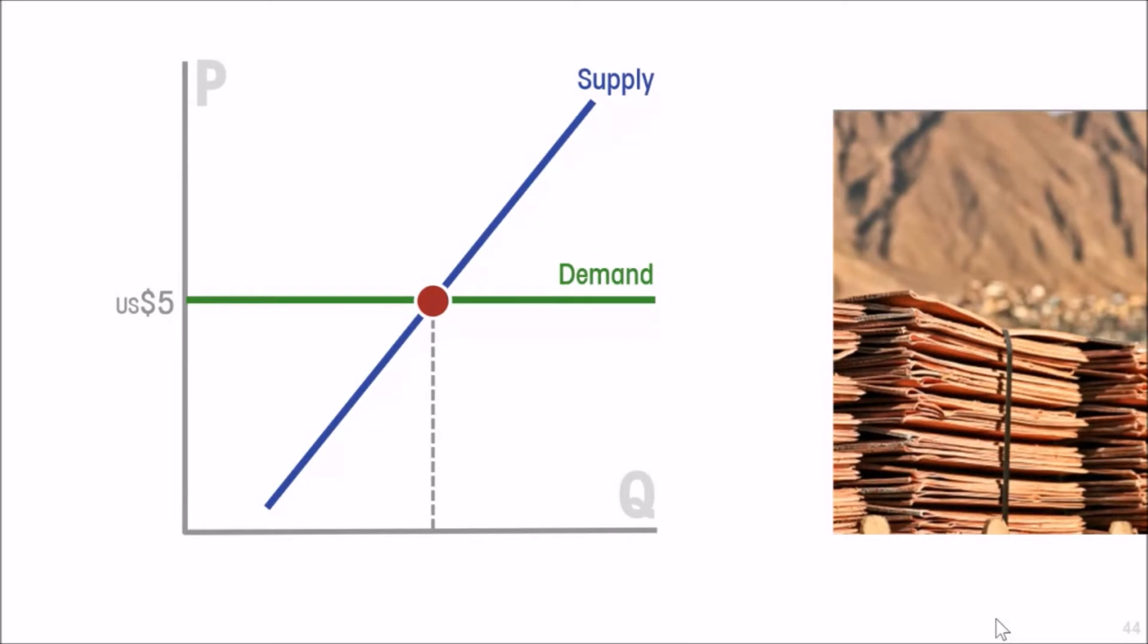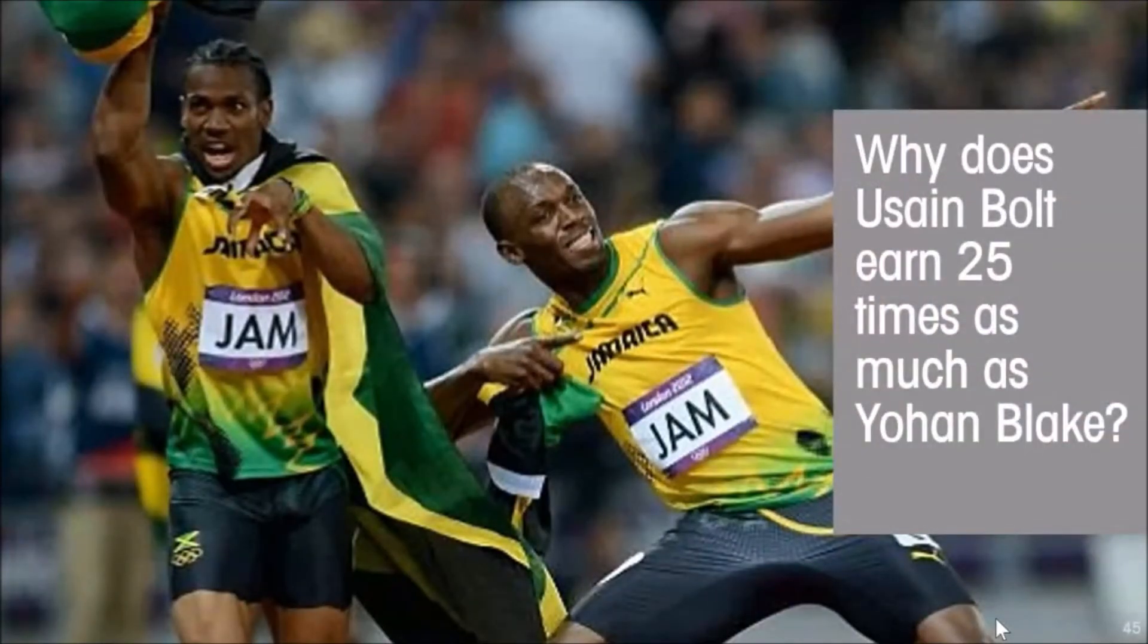So that is how we get a horizontal demand curve. It's actually called a small country assumption—that a small country does not have to accept a lower price to sell more or fetch a higher price if it sells less. Which brings us to these two gentlemen: Johan Blake on the left and Usain Bolt on the right.